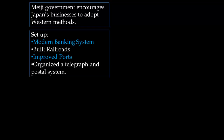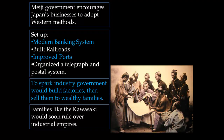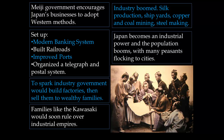They set up a modern banking system, built railroads to increase trade, improved their ports for outside trade, and organized a modern telegraph and postal system. To spark industry, the government built factories and then sold them to wealthy families — this is where families like the Kawasaki family would come to rule industrial empires. Industry boomed: the silk industry, shipyards, copper and coal mining, and steel-making all increased, and Japan became an industrial power.